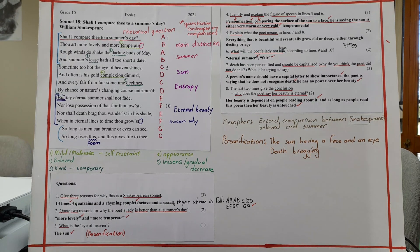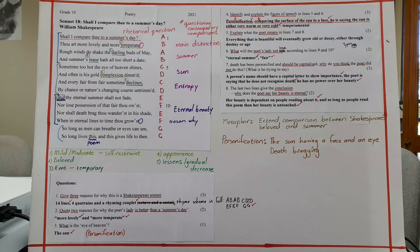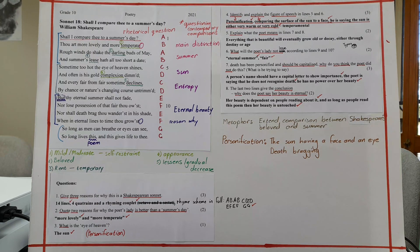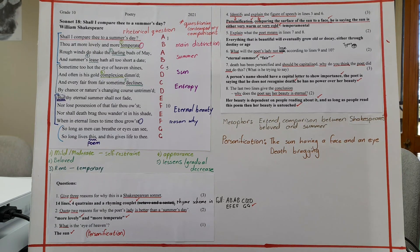So number one, give three reasons for why this is a Shakespeare sonnet. Quote two reasons for why the poet's lady is better than a summer's day. What is the eye of heaven? Number four, identify and explain the figure of speech in lines five and six.